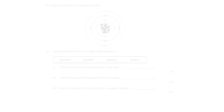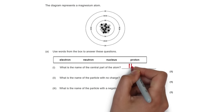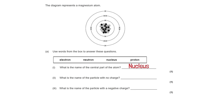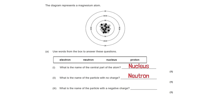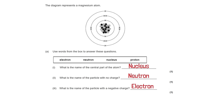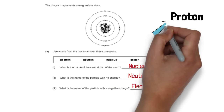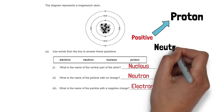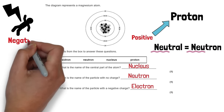Using a diagram of a magnesium atom: the central part is the nucleus, the particle with no charge is the neutron, and the particle with a negative charge is the electron. A helpful memory trick: P for positive is the proton; neutral and neutron sound the same; and electrocuting someone is negative, so that's the electron.